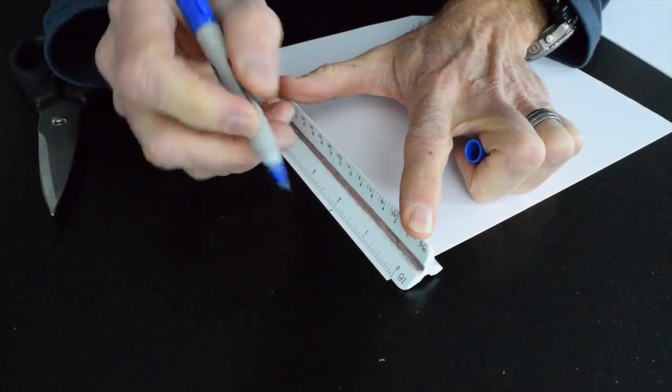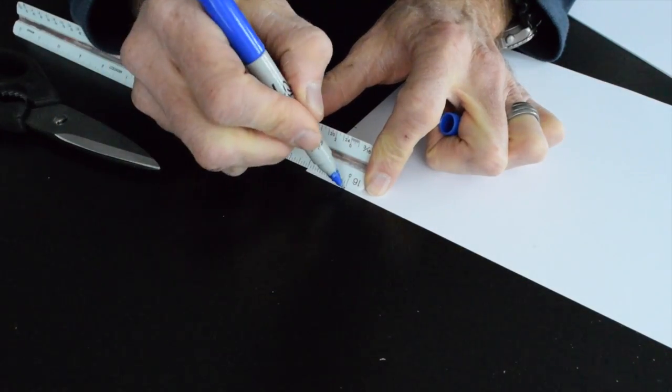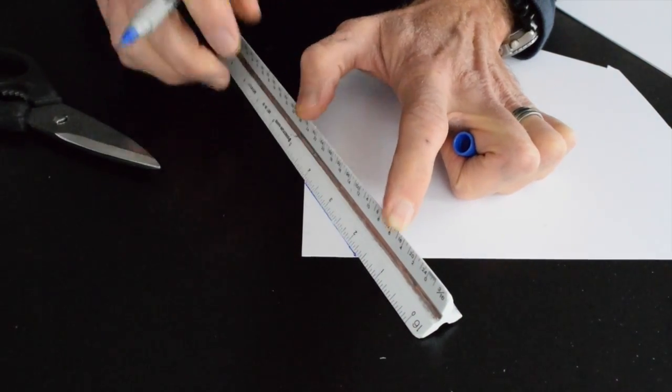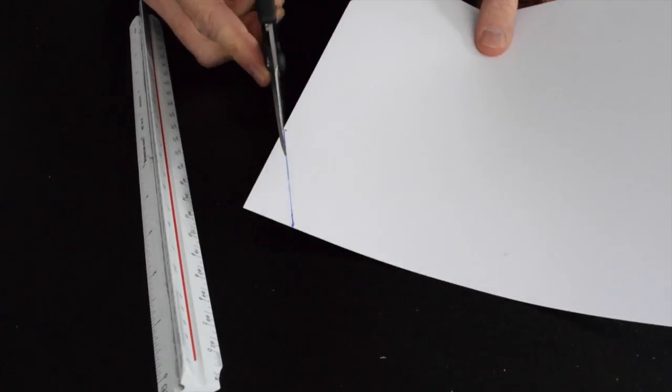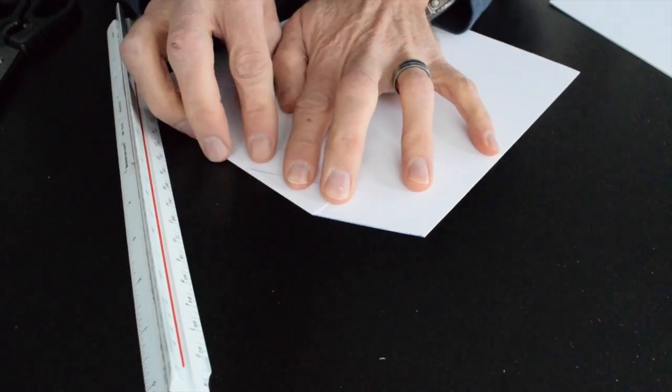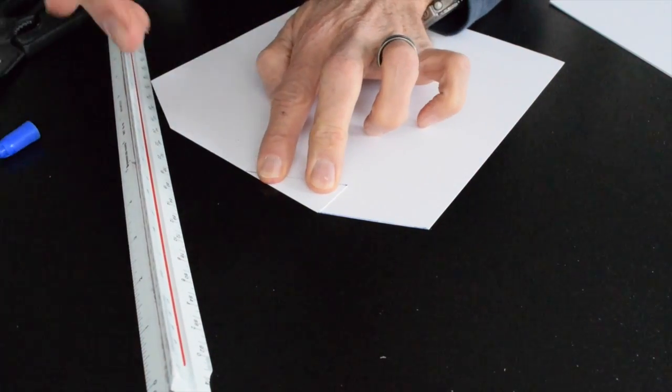To make the fins, I use another piece of the same cardstock paper and draw the first fin on it. Starting on a corner, I measure up the edge of the paper 2 inches and then in the other direction 1 inch. After connecting the two measurements, I cut out the fin.